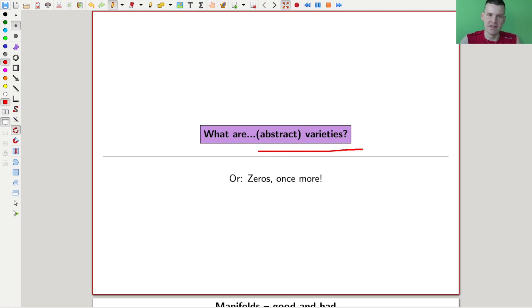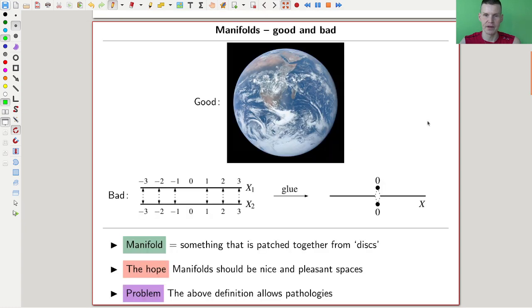And it's really this idea of zeros once more. I will remind you what prevarieties are, and abstract varieties are prevarieties plus one condition, which I will kind of explain, try to motivate where it really comes from, the one extra condition.